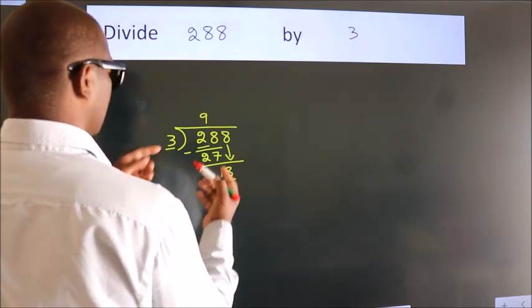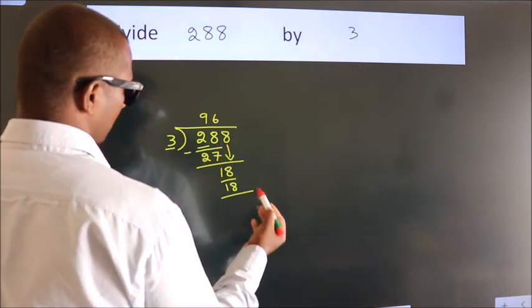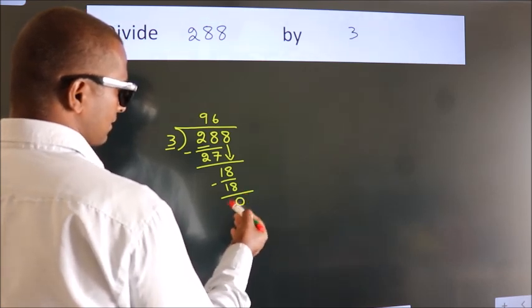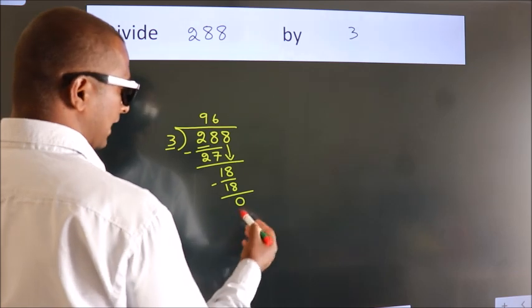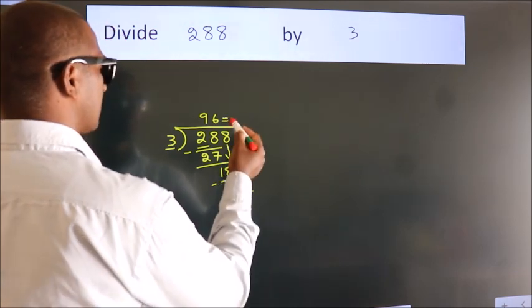In the 3 table, 3 times 6 is 18. Now we subtract. We get 0. After this, no more numbers to bring down, and we got remainder 0. So this is our quotient.